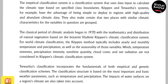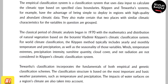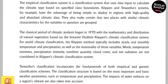The empirical classification system uses data input to calculate the climatic type based on specific class boundaries. Systems like Köppen and Trewartha have the advantage of being simple to deploy in regions with abundant climatic data. They also ensure that two places with similar climate characteristics are grouped together using equal equations.